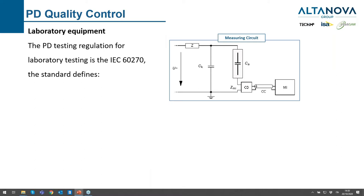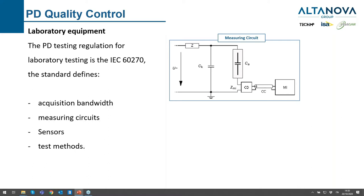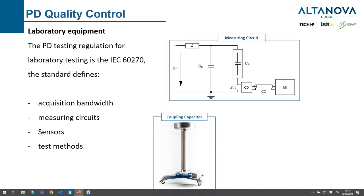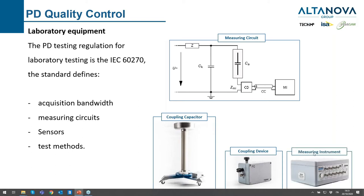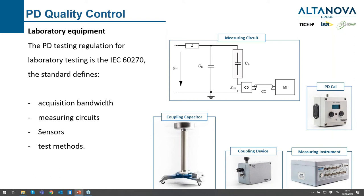When speaking about quality control in laboratories, we also need to follow all the single steps of the IEC 60270 and related IEC standards, which define the acquisition bandwidth, the measuring circuit, the sensor, and the test method. We will need a coupling capacitor (CA), a coupling device (CD), and a measuring instrument. With this full set, including the PD base 2 and the PD calibrator, we can perform all the standard IEC 60270 tests.